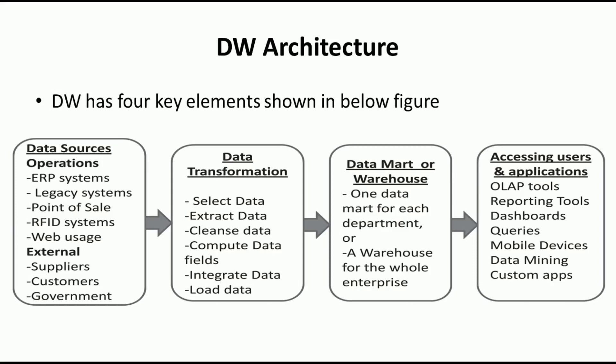The data warehouse sources include operational sources and external sources. Operational sources include ERP systems, which generate data continuously, and legacy systems like servers that generate log files. Another source is point of sale in the retail industry — the checkout points where we collect customer information such as name, email, mobile number, and what the customer bought on a particular day.